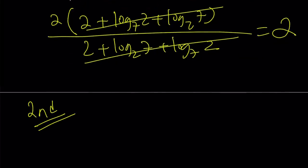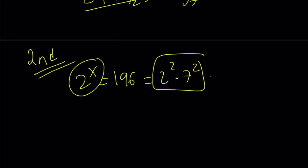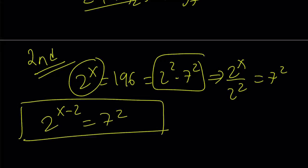Second method. My second method basically uses exponentials. So, let's take a look at the second method. 2 to the power x equals 196. I'm going to write it as 2 squared 7 squared. And from here, by setting these equal to each other, I'm going to be able to divide both sides by 2 squared. And that means 2 to the power x minus 2 is 7 squared. So, that's one of the equations that I'm going to be using.